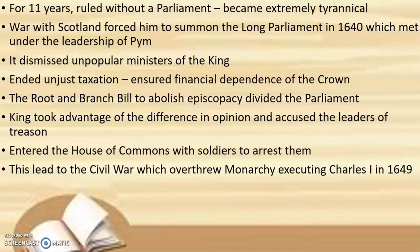However, an internal conflict divided the members of parliament. The Root and Branch Bill was brought up to abolish episcopacy, and a group of members opposed it, resulting in internal conflict. The king became extremely happy, as he was able to take advantage of the differences in opinion. He accused all the leaders of treason, entered the House of Commons with his soldiers, and arrested them. This was the reason for the civil war, which ultimately overthrew monarchy and led to the execution of Charles I in 1649.